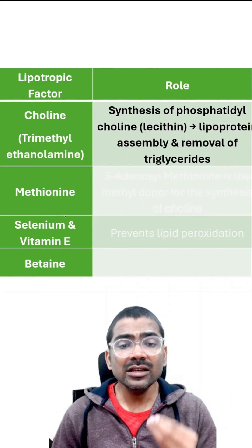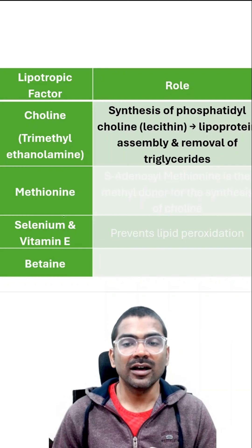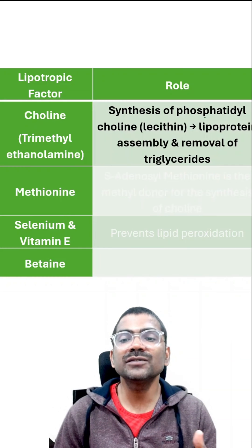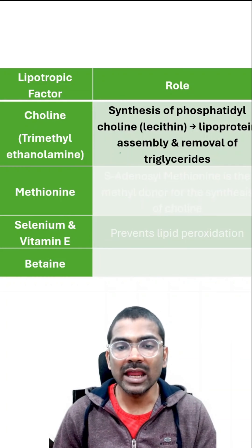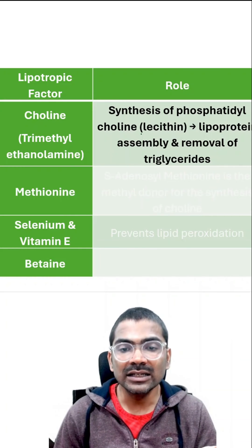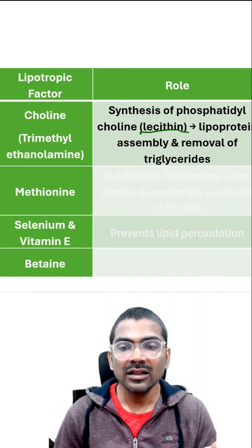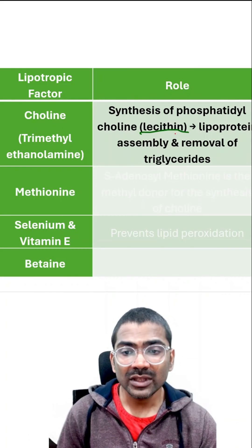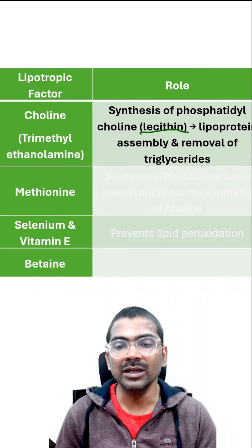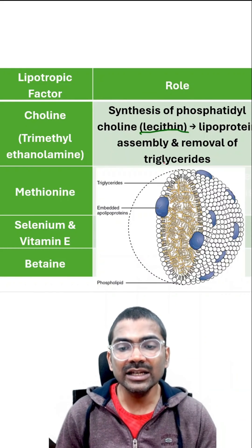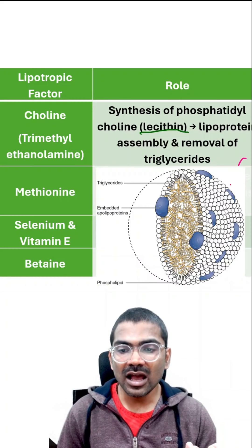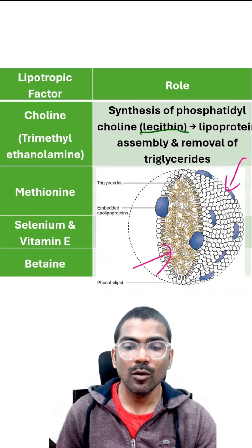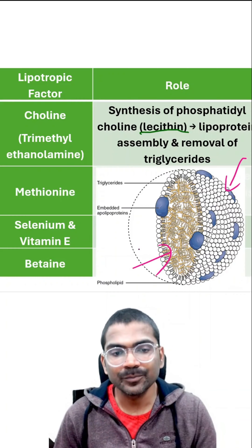Choline is needed for the synthesis of phosphatidylcholine, that is lecithin. Lecithin is a phospholipid which is needed for the assembly of lipoproteins.